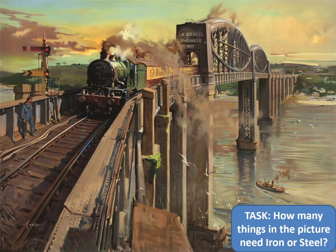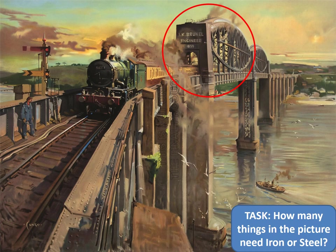It's fair to say that the Industrial Revolution could not have taken place without the mass production of iron and steel. Of course, iron had been made for thousands of years, but largely in very small quantities in very small workshops. The Industrial Revolution was going to change all that. Firstly, and perhaps most obviously, we've got the locomotive itself, which would have largely been made from welded or cast items of iron and steel.